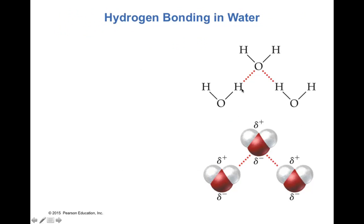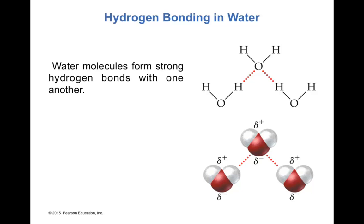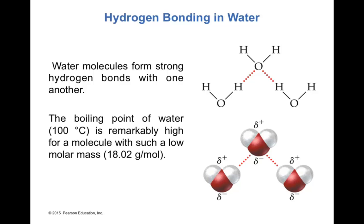Water has both a dipole moment and polar O–H bonds. The partial positive hydrogens are attracted by the two lone pairs on neighboring oxygen atoms, allowing each water molecule to form two hydrogen bonds simultaneously. Water molecules form strong hydrogen bonds with one another, explaining the remarkably high boiling point of 100°C for a molecule with such a low molar mass of only 18 g/mol.